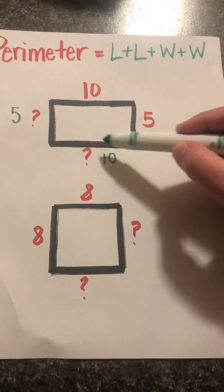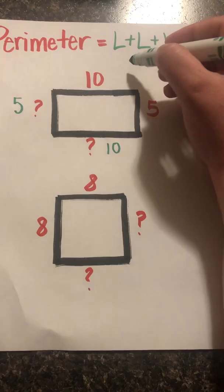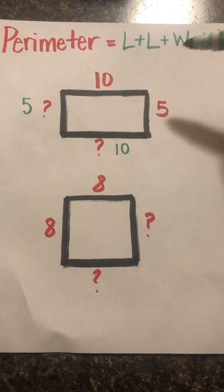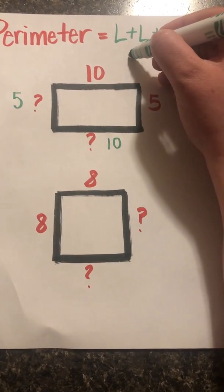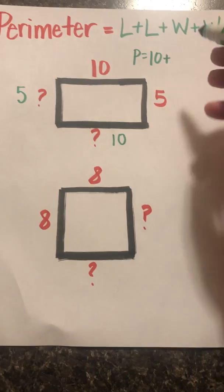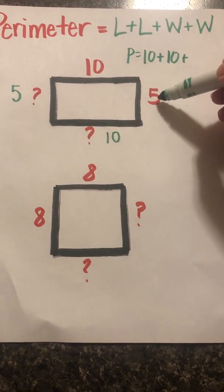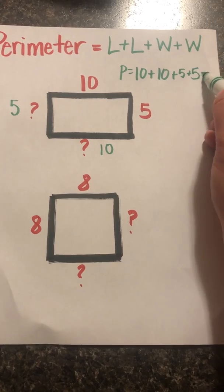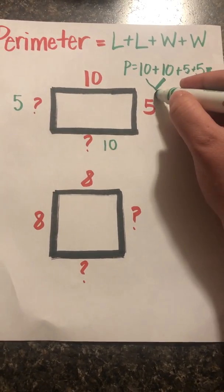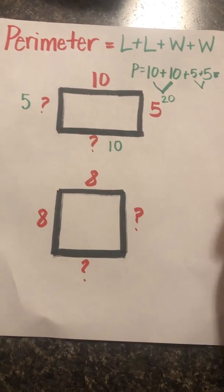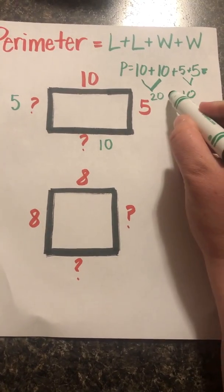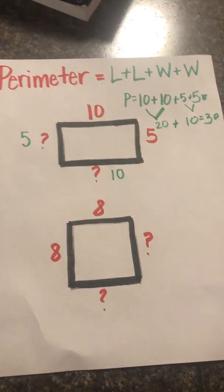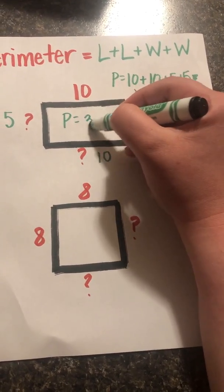Now that we have figured out the missing sides, we can find the perimeter. Remember, perimeter equals length plus length plus width plus width. So our lengths here are ten plus ten, then plus our widths, which would be five plus five. What is ten plus ten? Twenty. What is five plus five? Ten. So now let's add those together: twenty plus ten is thirty. The perimeter of this rectangle is thirty.